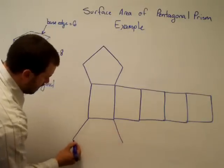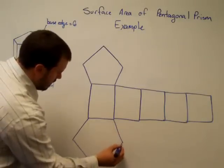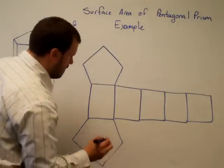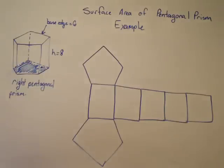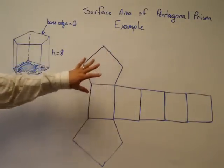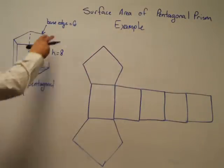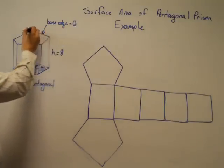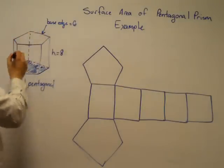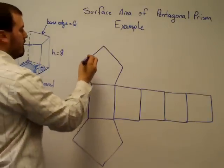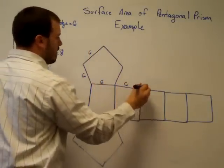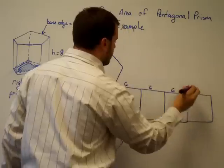Pictures don't have to be perfect here, they just should be a little bit easier to work with than the three-dimensional image that was there. So let's label this now with the information I know. It says that we've got a base edge of six. Well, the base edge is the edges of the base, or all the edges of the pentagon. So six, six, six, all the way across here.